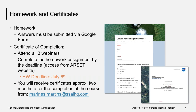We will have one homework assignment after all three sessions, which will be submitted through Google Forms. The link will be available after the final session tomorrow on the website, and we will post it in the chat box during the final session. To receive credit for homework you must submit all answers via Google Forms by July 6th. To receive a certificate of completion, you must attend all live webinars and complete the homework. It takes some time to process these certificates so you can expect to receive them about three months after the completion of the course.